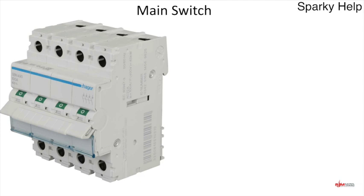Main switches come in many forms and sizes. Obviously this one happens to be 100 amp, but it's a four-pole. If you look on the front of this switch, they use those symbols again — the little circles — which basically means it's an on-load switch. On the side it says BSEN 60947-3, which is the standard to which the manufacturer has made it, being 100 amp in this case. If you look underneath that, you can see it says AC22A — more on that later.